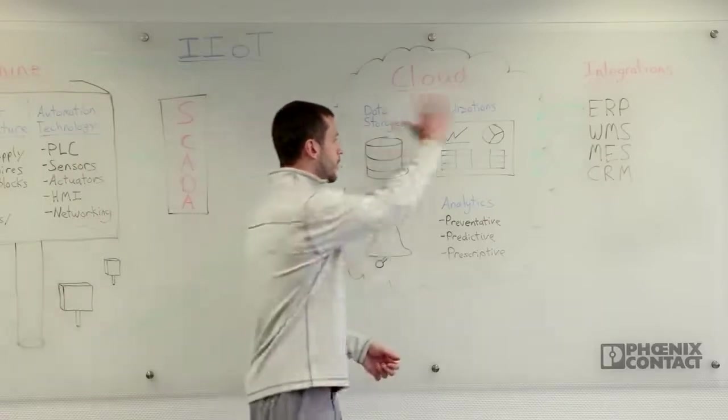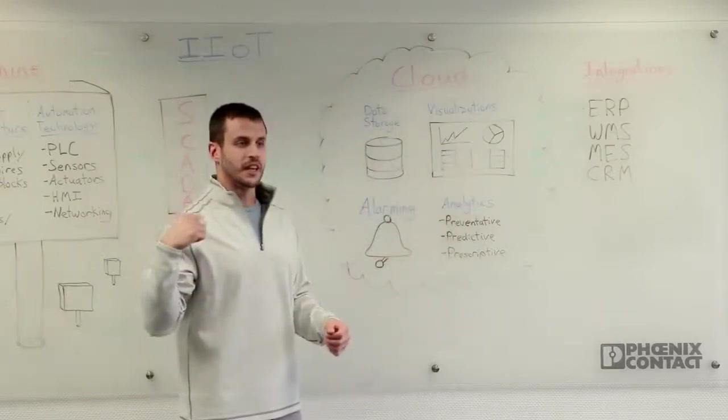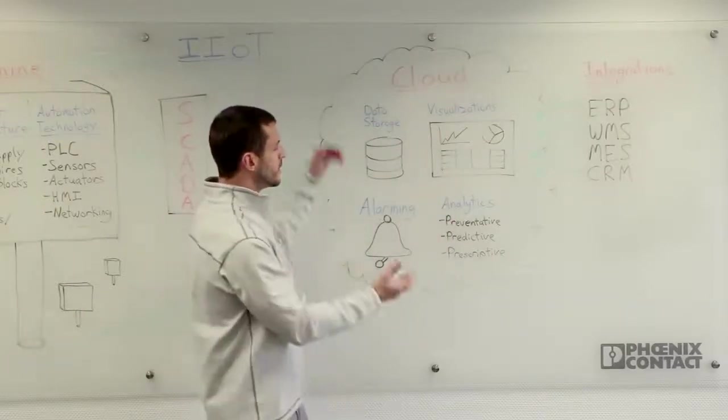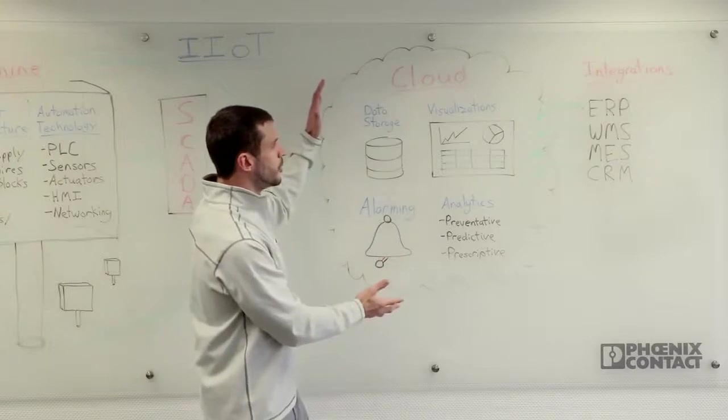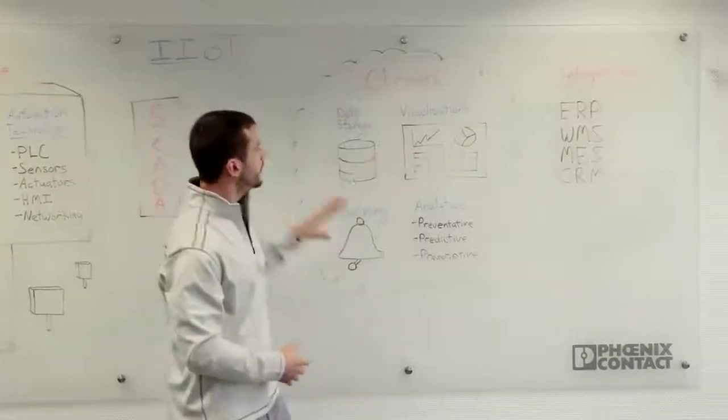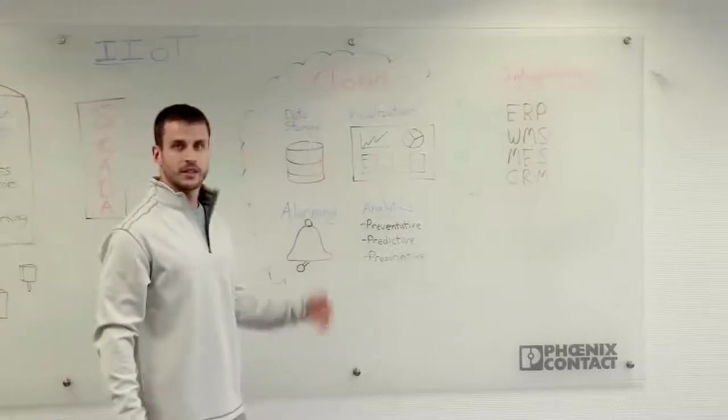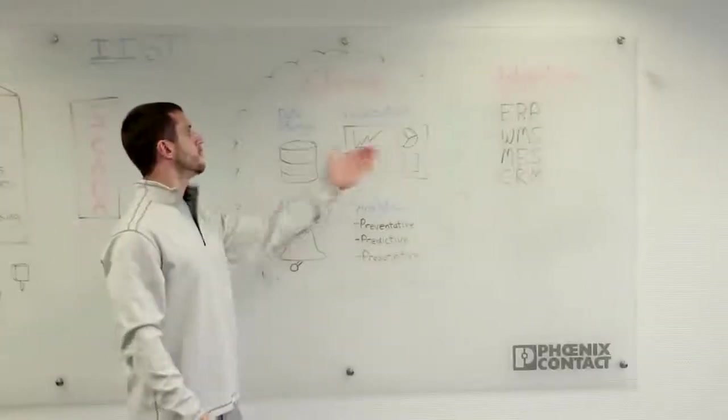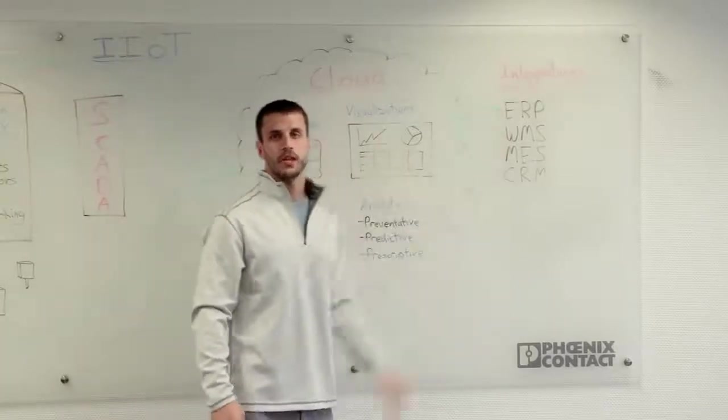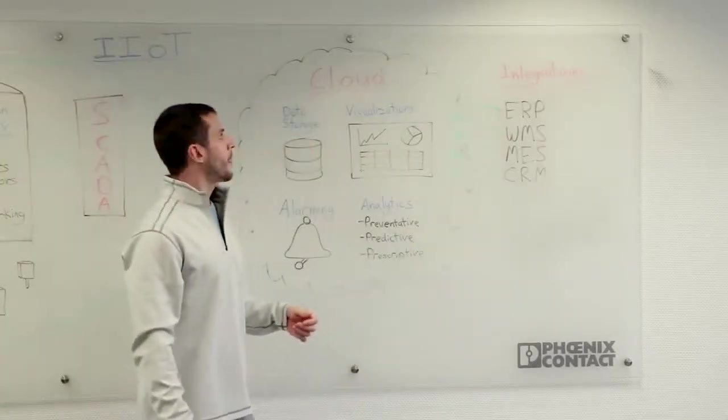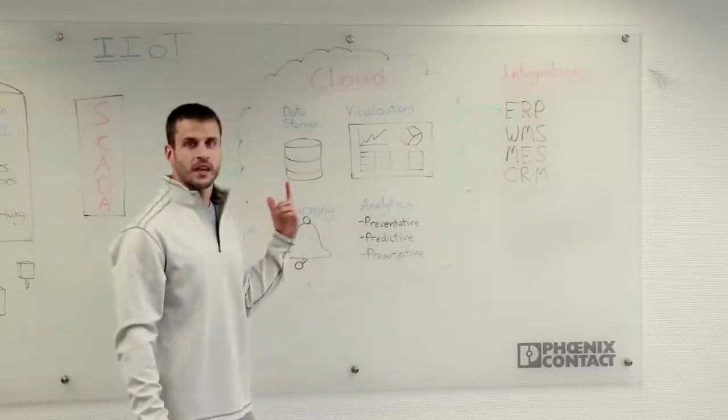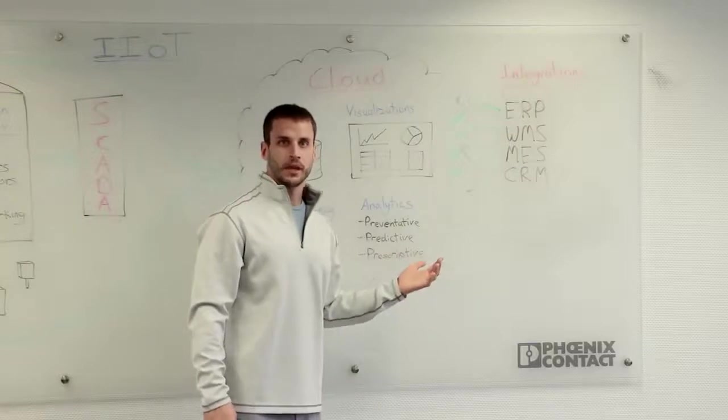Now, all I was talking about was with the machine data, but the industrial Internet of Things doesn't stop here. The industrial Internet of Things, since it's on a centralized place in the cloud, you can start to integrate other enterprise softwares with this data. So some of the examples of this software you might mix in with your machine data is your ERP or your enterprise resource planning data. You might want to do this so that your machine efficiency can help optimize your inventory planning.